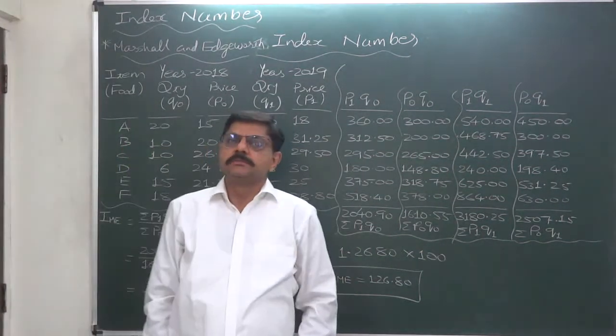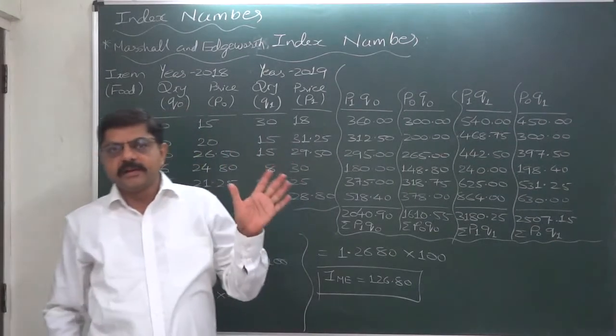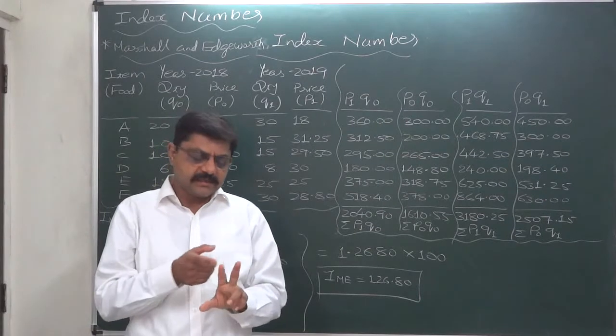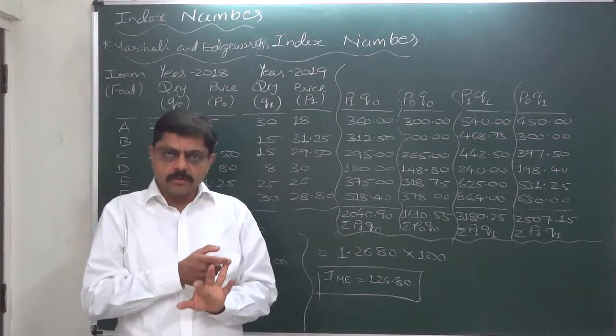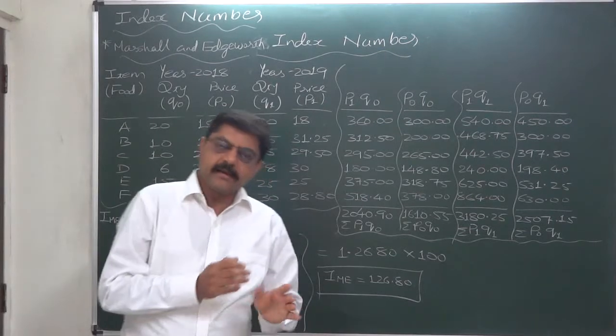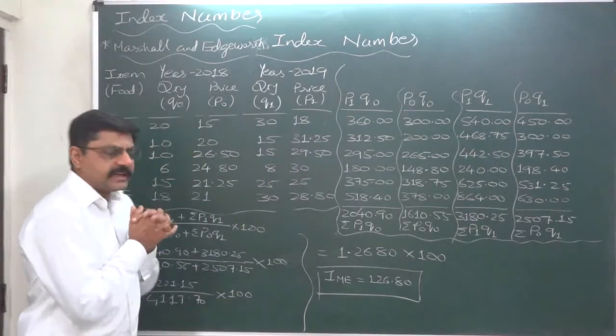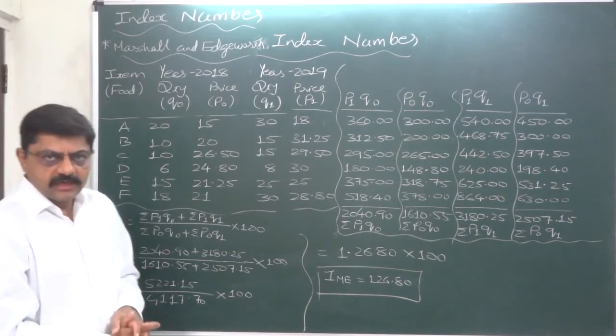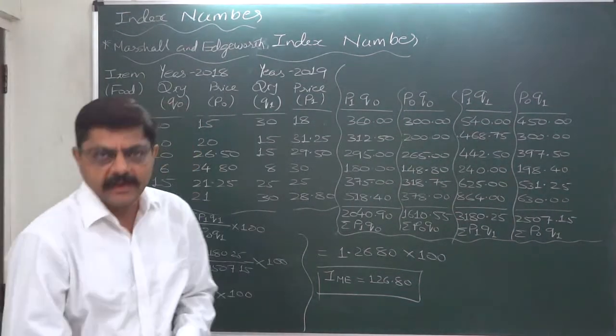We learnt five different types of weighted index numbers: Laspeyres index number, Pashe's index number, Fisher's index number, Dorbys and Bowley index number, Marshall and Hoverty index number. And I used the same case or same problem to learn the calculations of all these five index numbers.